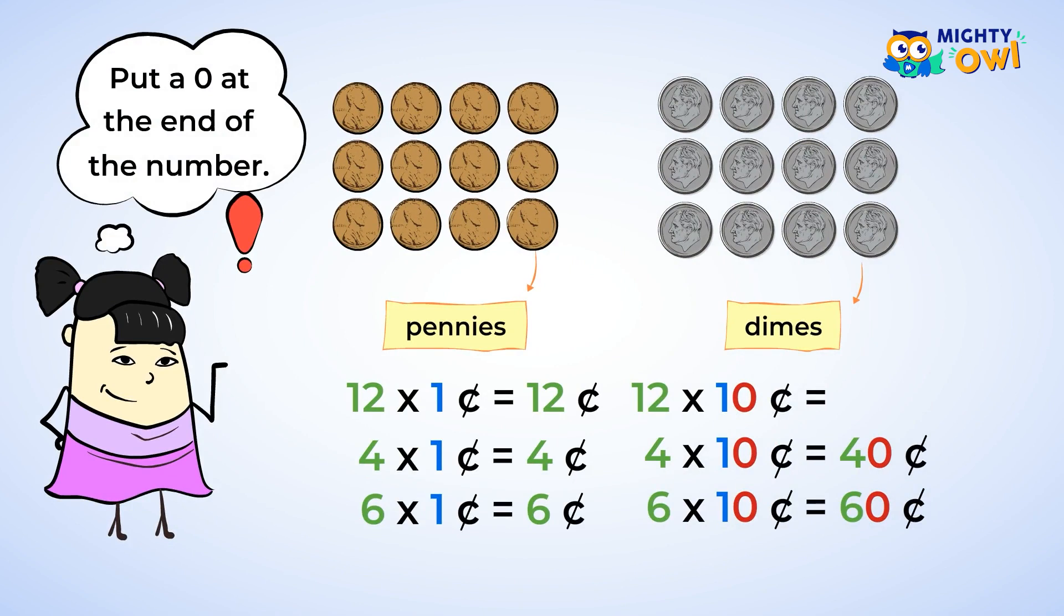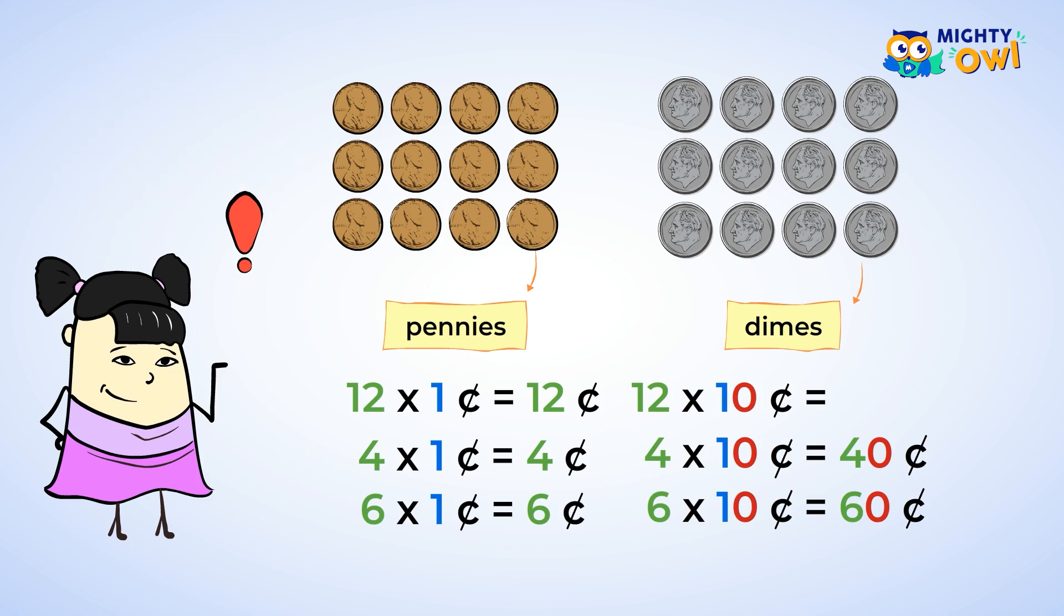And now you can impress people with your ability to multiply large numbers. We'll look back at that big problem with twelve dimes. Twelve times ten. Twelve times one is twelve. And if you take that answer of twelve and you add a zero to the end of the number so that the zero was now in the ones place, you'd get one hundred twenty.